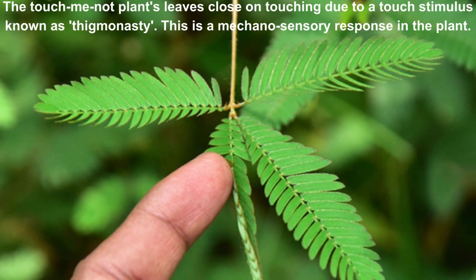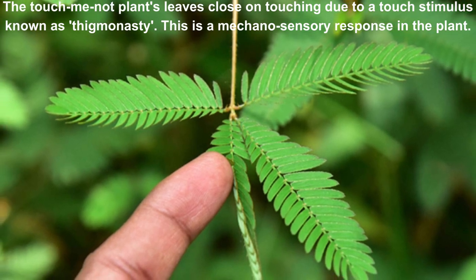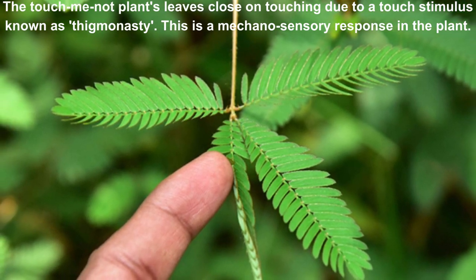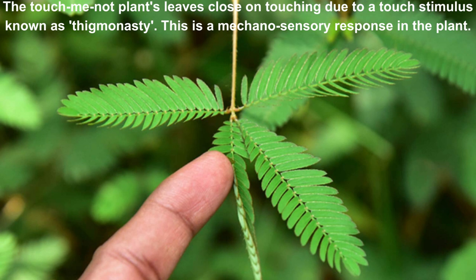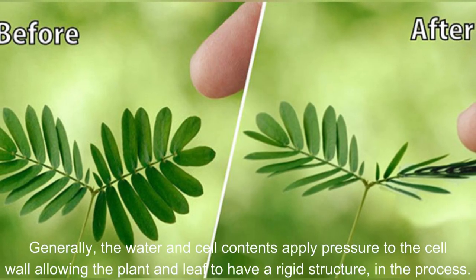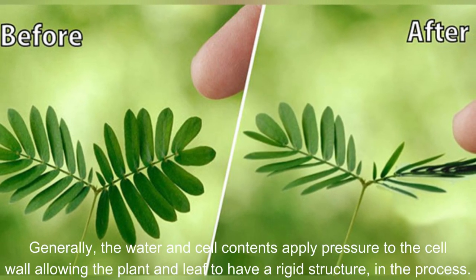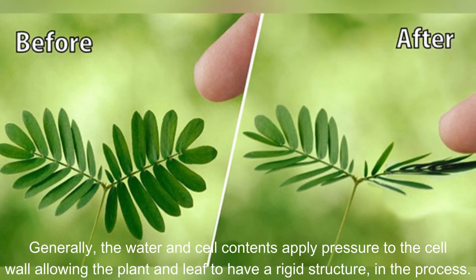The touch-me-not plant's leaves close on touching due to a touch stimulus — a mechanosensory response in the plant. Generally, the water and cell contents apply pressure to the cell wall, allowing the plant and leaf to maintain a rigid structure.